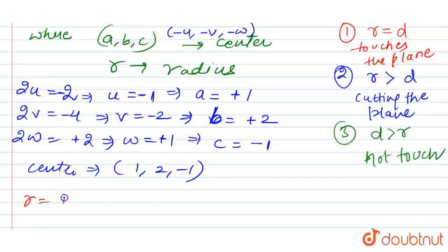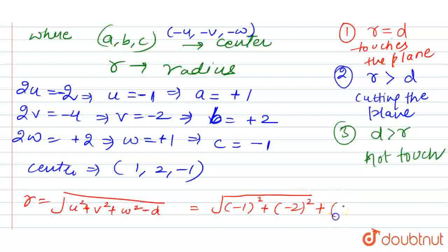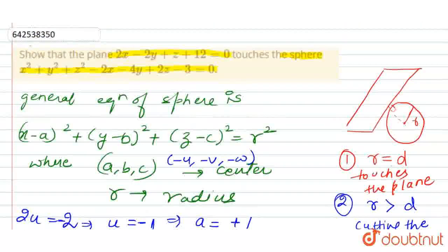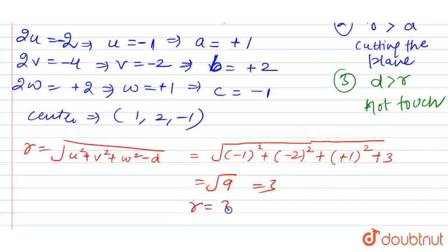Now we will find the radius. The formula for radius is the square root of u squared plus v squared plus w squared minus d. Here u is minus 1, v is minus 2, w is plus 1, and d is minus 3. So we get the square root of 1 plus 4 plus 1 plus 3, which equals the square root of 9. The radius equals 3.